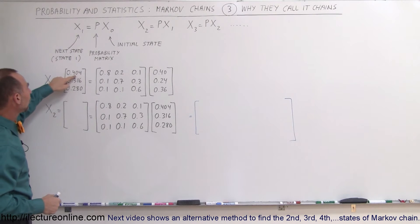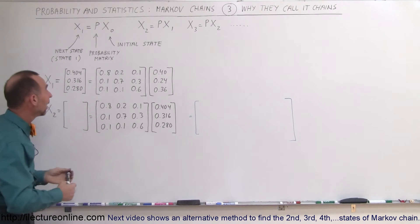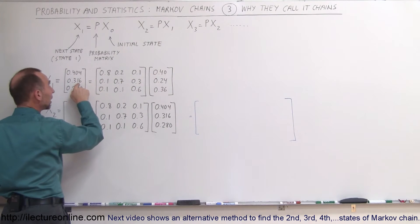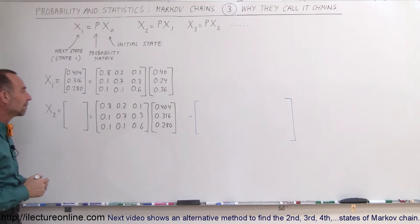From that we calculated that store A would now have 40.4% of all customers, store B would have 31.6%, and store C would have 28%. So you can see how store A gained a few customers, store B gained a lot of customers, and store C lost a lot of customers. Let's see what happens the following week.